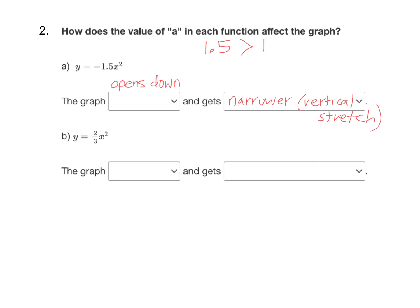For our second one here, we have a value of two thirds for a. Now that's a positive number, so we know the graph is going to open up. And because two thirds is less than one, it's below one. Anytime your a value is below one, that's going to take the graph and make it wider. We call that a vertical compression.